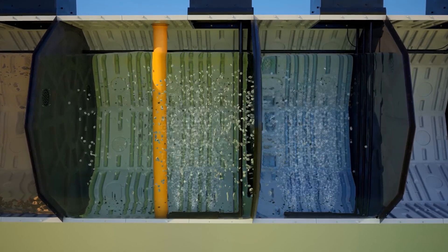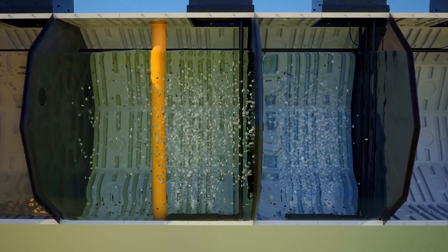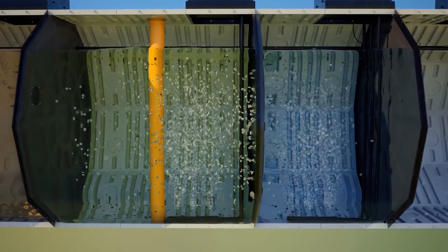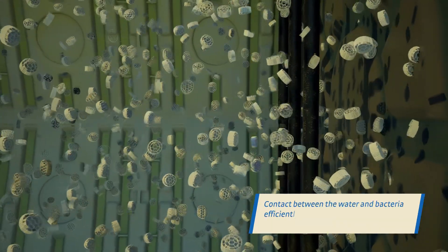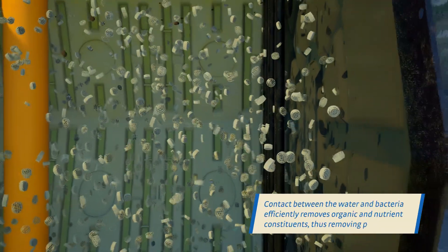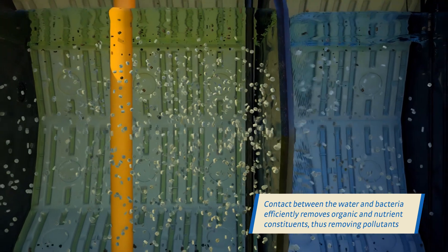Free moving plastic media begin the process of bacterial enrichment. These bacteria naturally consume organic material. Contact between the water and bacteria efficiently removes organic and nutrient constituents, thus removing pollutants.